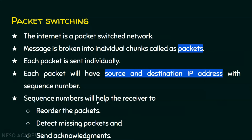The sequence number also helps the receiver send acknowledgements. For example, if packet number 5 is received, an acknowledgement is sent to the sender. If packet number 6 is not received, no acknowledgement is sent. The sender waits for the acknowledgement for a certain period; if none is received, it understands the packet may be lost and retransmits it. Packet switching has two approaches: datagram and virtual circuit.